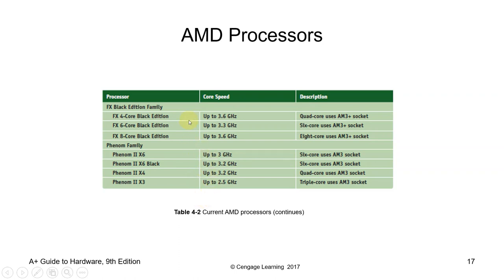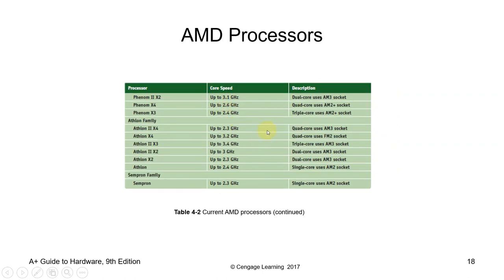For AMD, they also have their own processor releases. The FX Black Edition family has core speeds up to 3.6 GHz with quad-core, six-core, and octa-core options. The Phenom family goes up to 3 GHz with six-core, quad-core, or triple-core configurations depending on the socket. Just like Intel, AMD also has legacy processors such as the Sempron and Athlon.